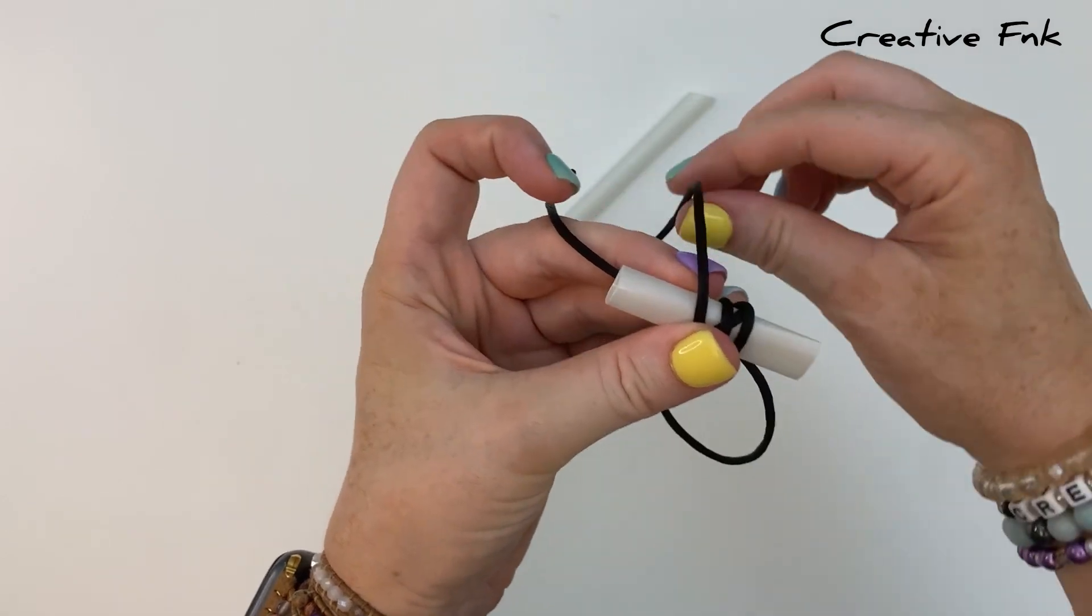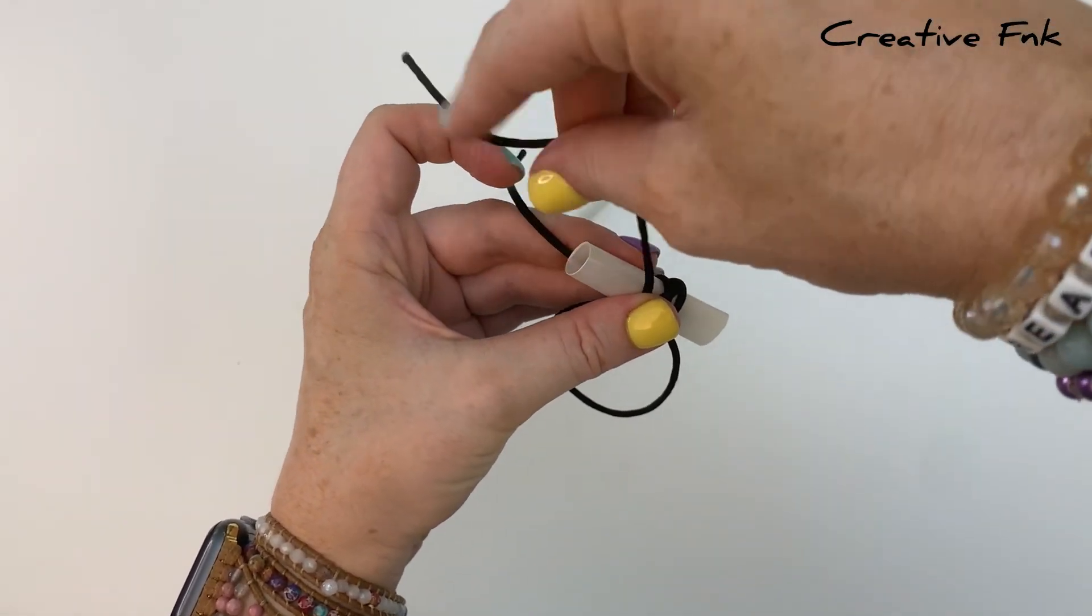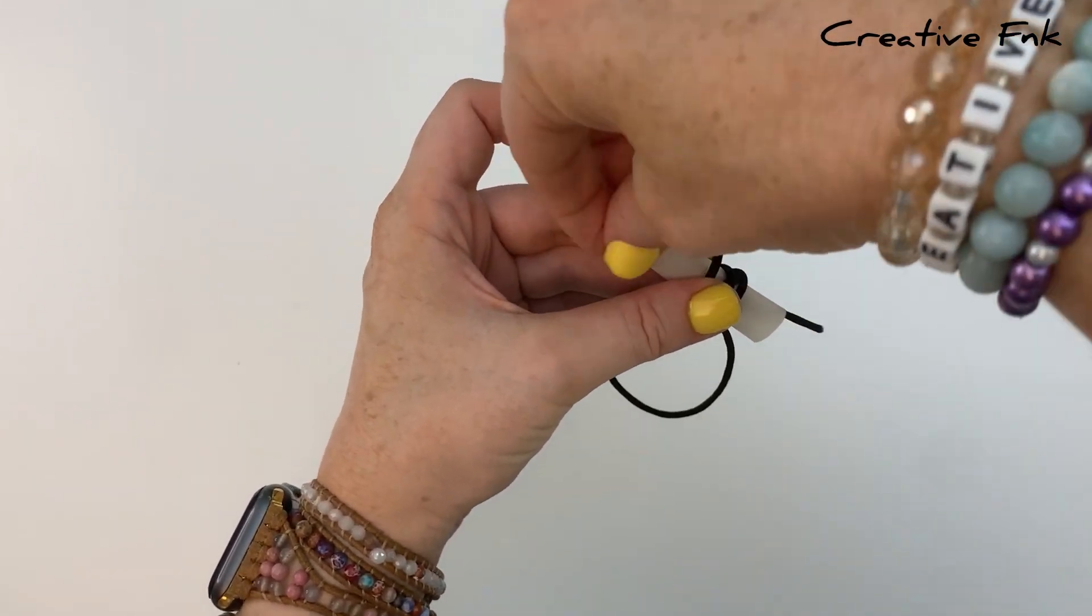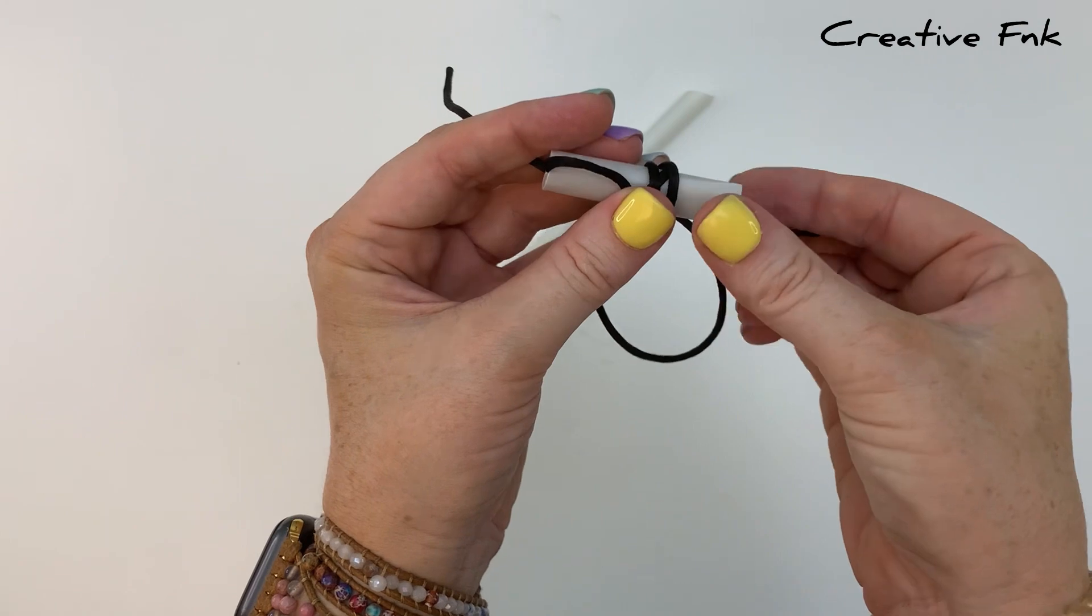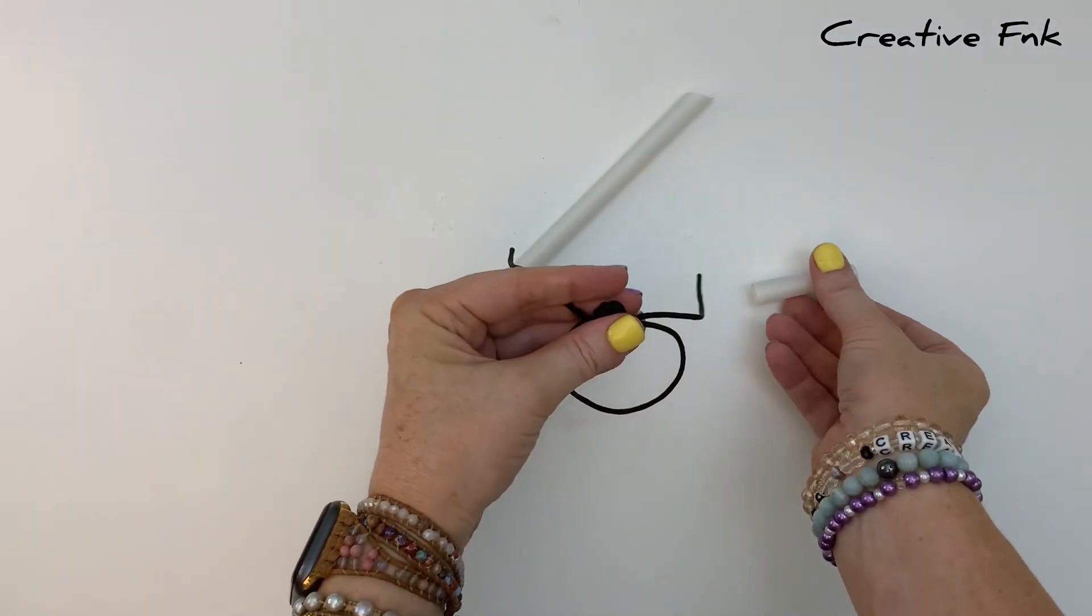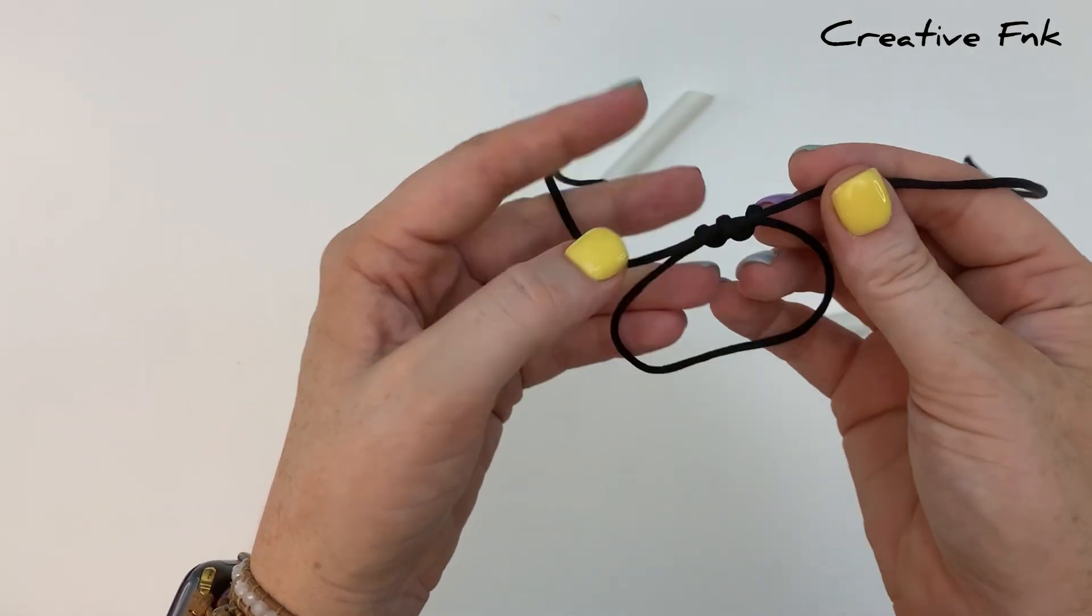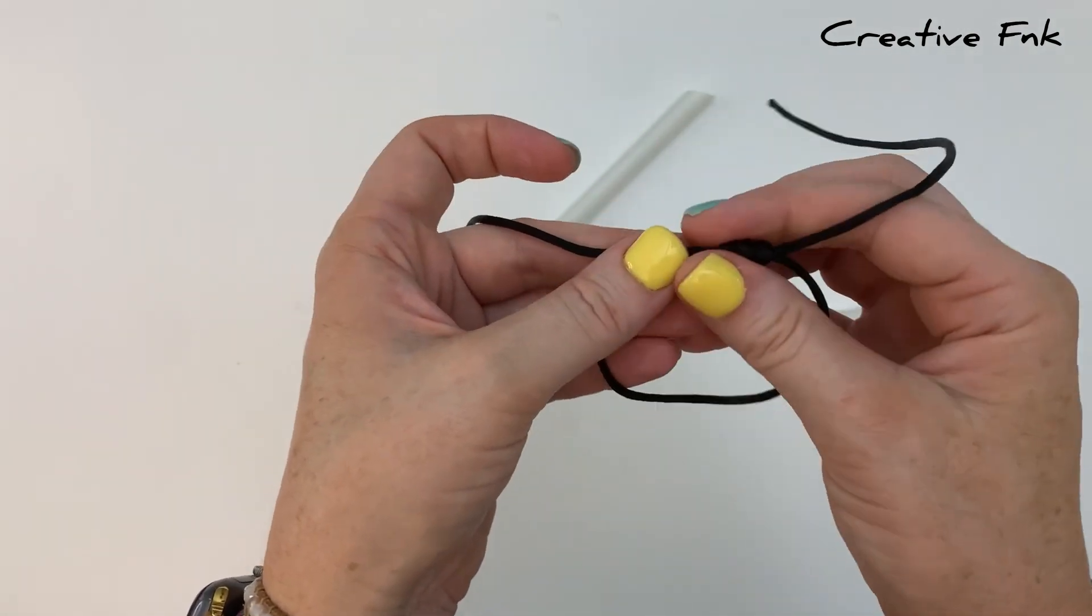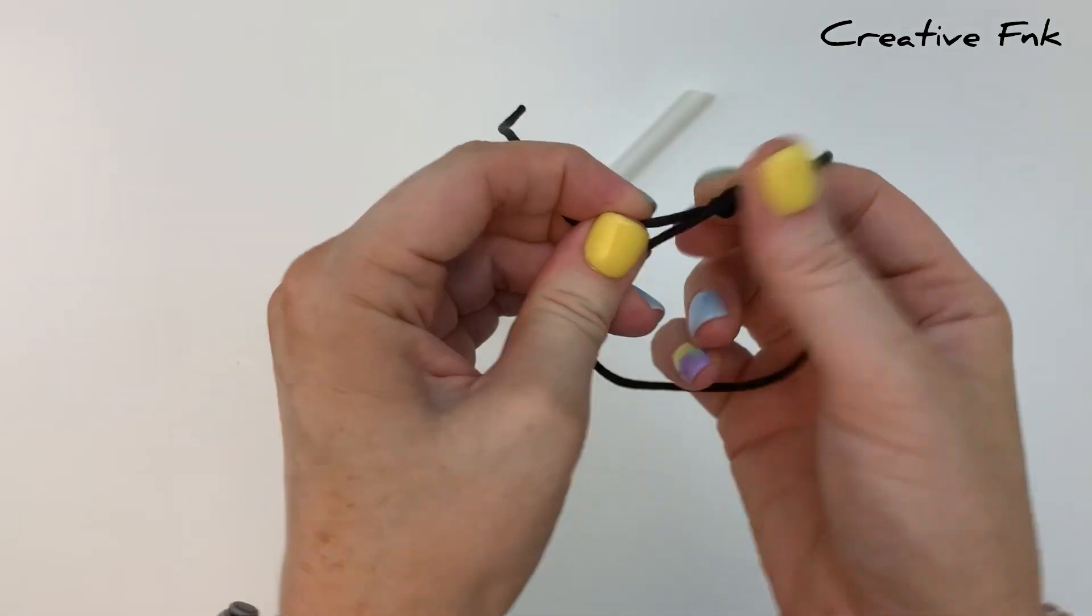Now we're going to take the end of our cord here and poke it down the left hand side of our tube. Pull it out the right hand side and then we can gently pull our tubing out as well. Now we can gently pull all our cords tight on all the different angles to pull our little barrel knot nice and tight and tidy there.